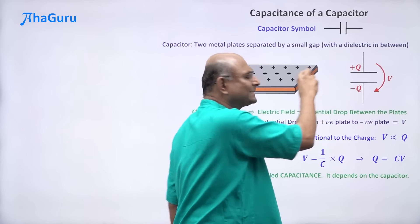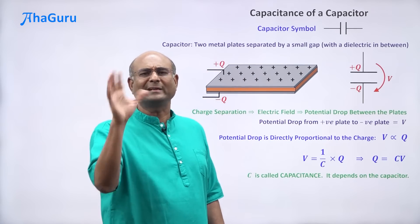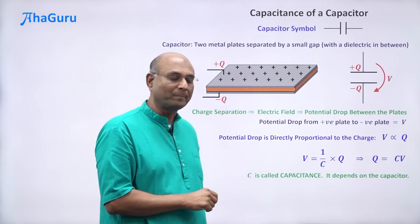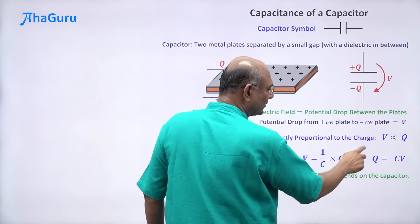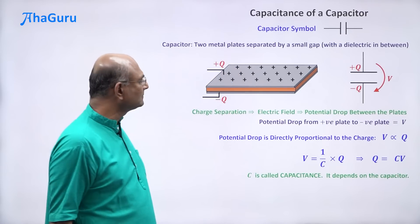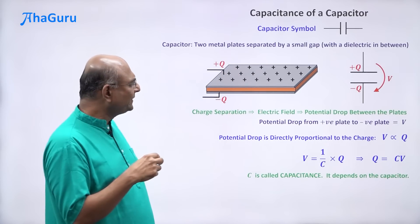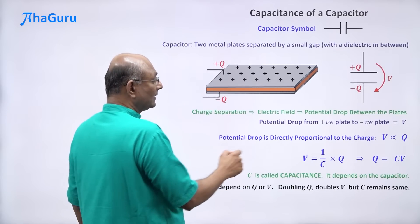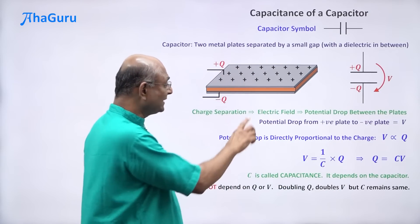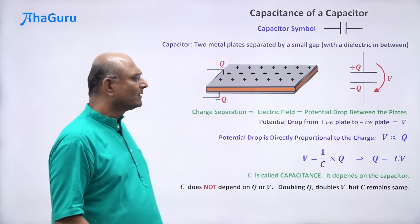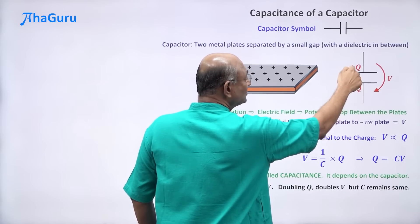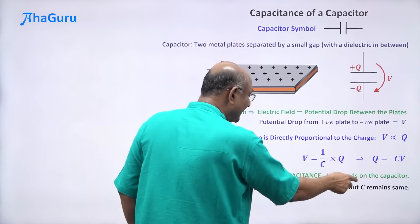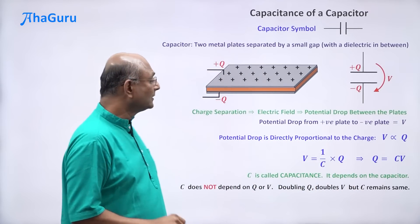Capacitance C depends on the particular capacitor. This capacitor may have C value 3 units; a different capacitor may have C value 7 units. C is Q by V. You might think C depends on Q and V, but no — C does not depend on Q or V. If I double Q, V will double, so Q by V remains the same. C remains the same. Changing Q will change V, but C stays constant.